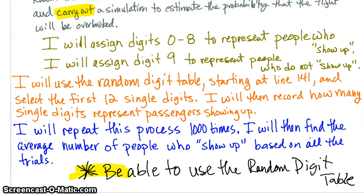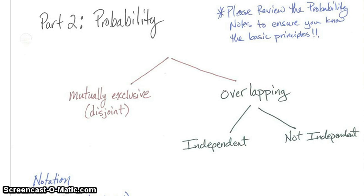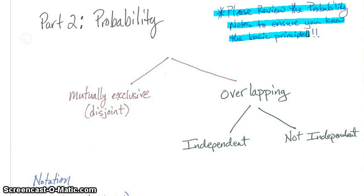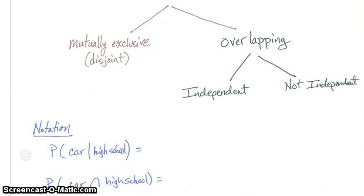Now let's look at Part 2 of Chapter 5: probability. Please review the probability notes to ensure you know the basic principles — those are the ones on Edmodo. We've talked about mutually exclusive or disjoint versus overlapping events, and we need to understand the differences between these two. We also need to understand that if we have overlapping events, those events are either independent or not independent.